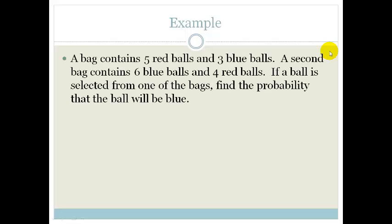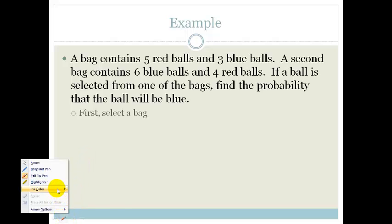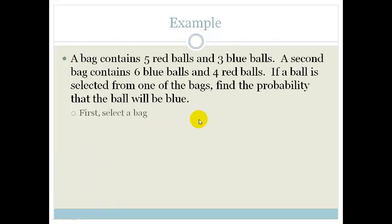Let's look at an example. A bag contains five red balls and three blue balls, and we have a second bag which contains six blue balls and four red balls. If a ball is selected from one of the bags, what is the probability that the ball will be blue? The first thing we need to do is select a bag — we have to choose either bag one or bag two.